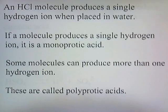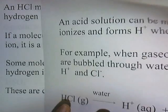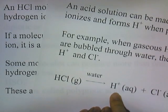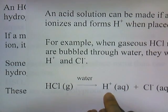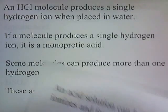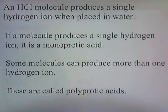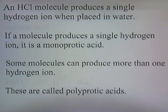An HCl molecule produces a single hydrogen ion when placed in water — one hydrogen ion. If a molecule produces a single hydrogen ion, it is a monoprotic acid. Some molecules can produce more than one hydrogen ion, and these are called polyprotic acids.